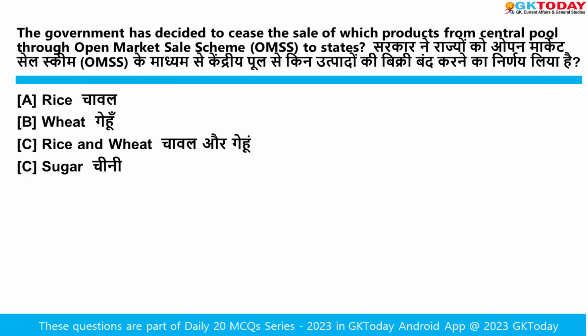The government has decided to cease the sale of which products from the central pool through the Open Market Sales Scheme to the states? The government has decided that the sale of rice and wheat will be closed from the central pool through the Open Market Sales Scheme to state governments. The aim of this decision is to curb inflation and ensure appropriate stock levels.